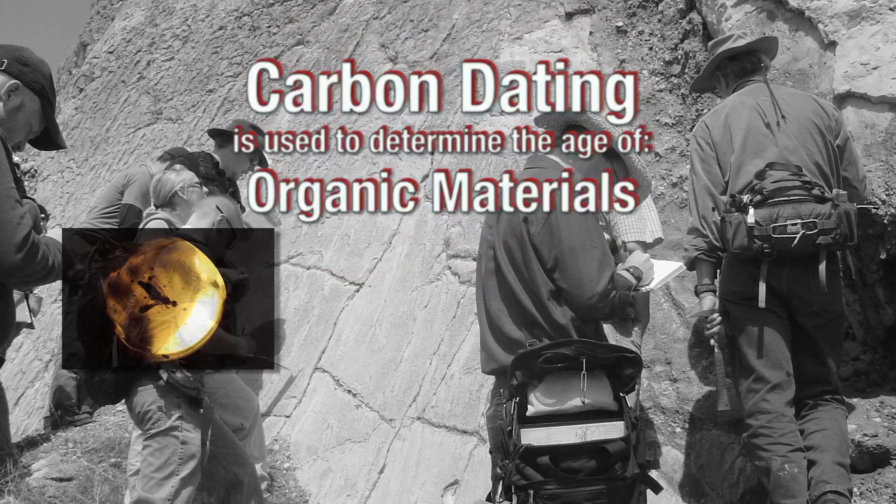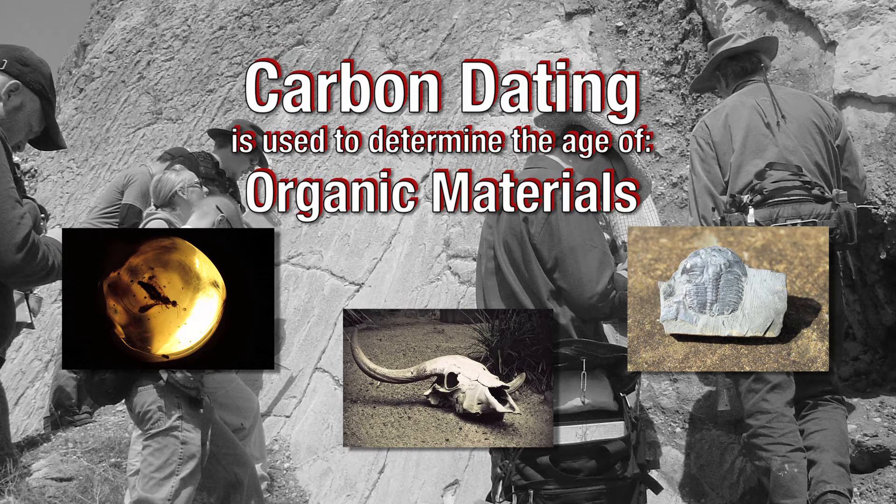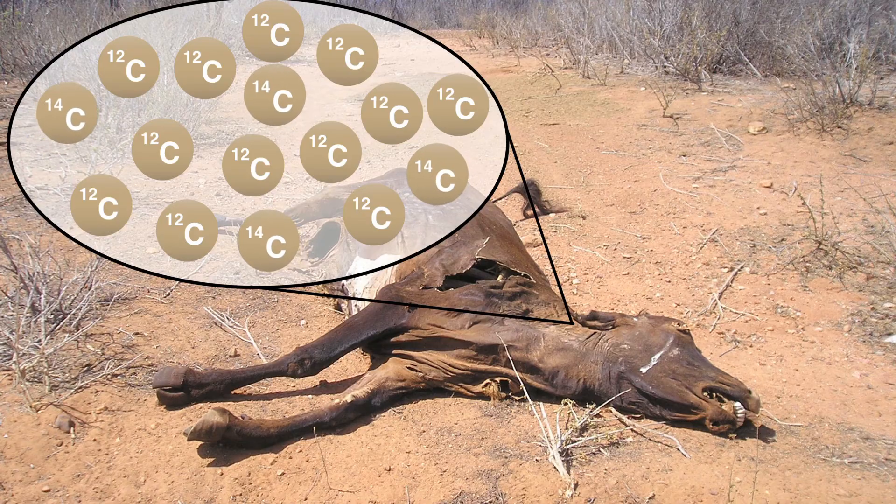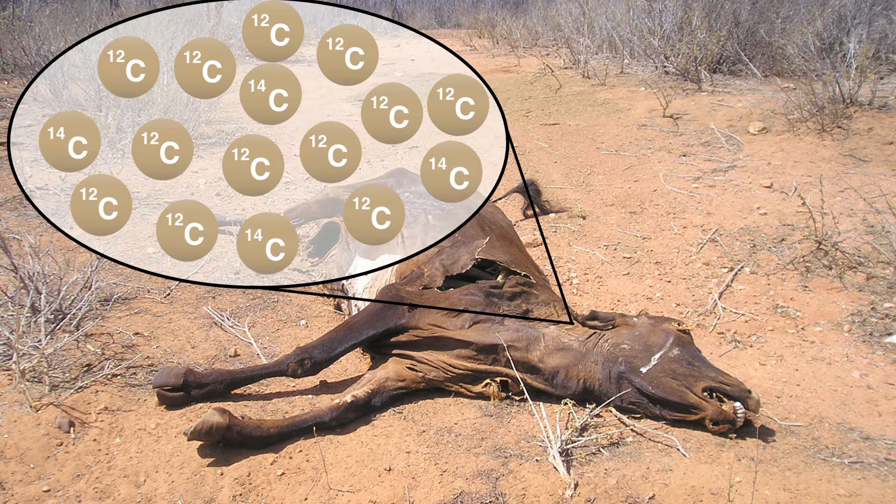The process of using carbon dating is used to date organic materials. When an organism dies, it retains a fixed ratio of carbon-14 to carbon-12.